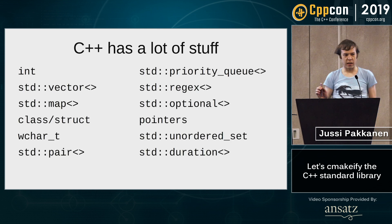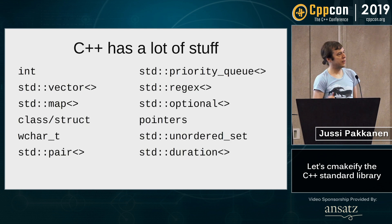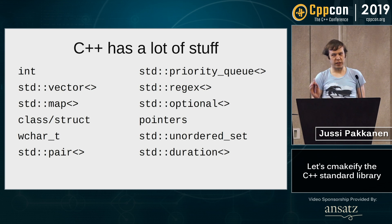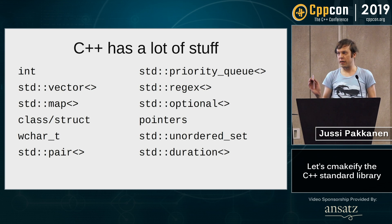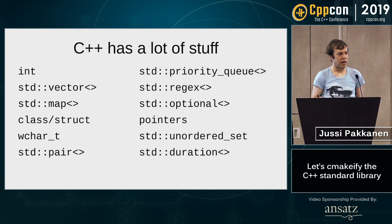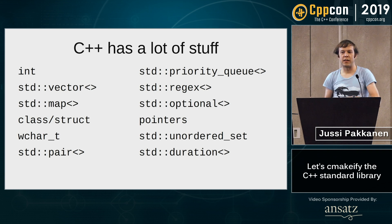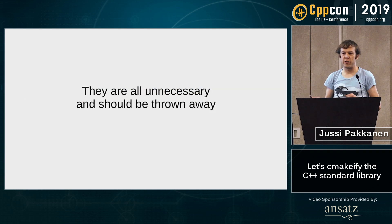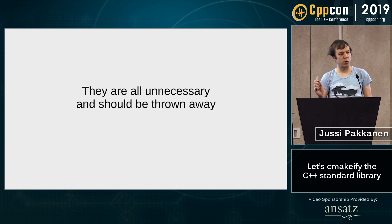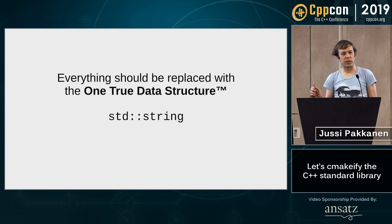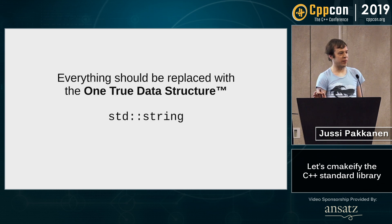Instead, what we find is that C++ has a lot of stuff in it: there's integers, there's strings, priority queues, and everything. And what we need to realize is that all of this is unnecessary. All of these things should be thrown away and replaced with the one true data structure, that is, STDString. Absolutely everything.